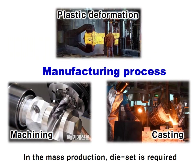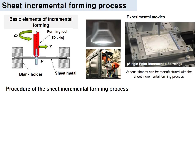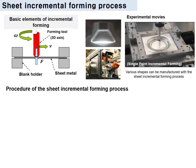There are three manufacturing processes of metal: plastic working, machining, and casting. For mass production, plastic working and casting are widely employed. For these two types of manufacturing processes, the die set should be included in the manufacturing process — a die set for the dedicated geometry. Nowadays, the need for flexible manufacturing processes is increasing. The sheet incremental forming process is a typical example of a flexible manufacturing process.